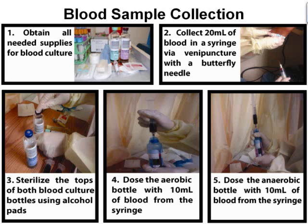Please note that while the collection protocol calls for performing venipuncture whenever possible, depending on the patient it may not always be the best method. For example, in severely burned patients, venipuncture is not recommended due to the lack of innate barrier to infection and possible contamination. In this case, blood is drawn from a line, frequently an arterial line. The issue here is contamination. The growth of certain species of gram-positive bacteria, frequently the common skin contaminant Staphylococcus epidermidis, a coagulase-negative staphylococci, often reflects contamination or arterial line colonization, whereas the growth of gram-negative bacteria may be indicative of bacteremia.